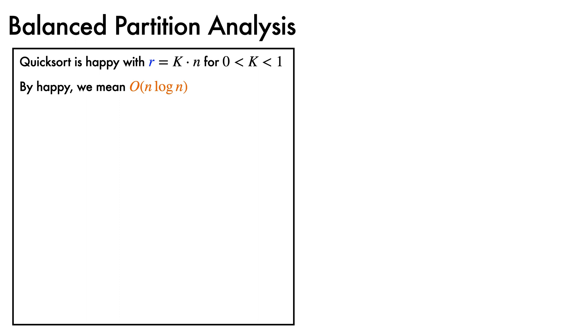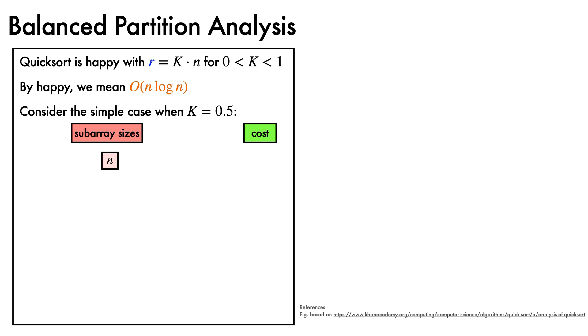To understand this, let's look at the simplest case when k is 0.5, again considering the subarray sizes and costs associated with recursion. As before, we start with a subarray of size n and a cost of c times n from calling the partition function. Then we recurse into two approximately equally sized subarrays. They would be exactly equal if n is even, except for the fact that the pivot gets excluded.